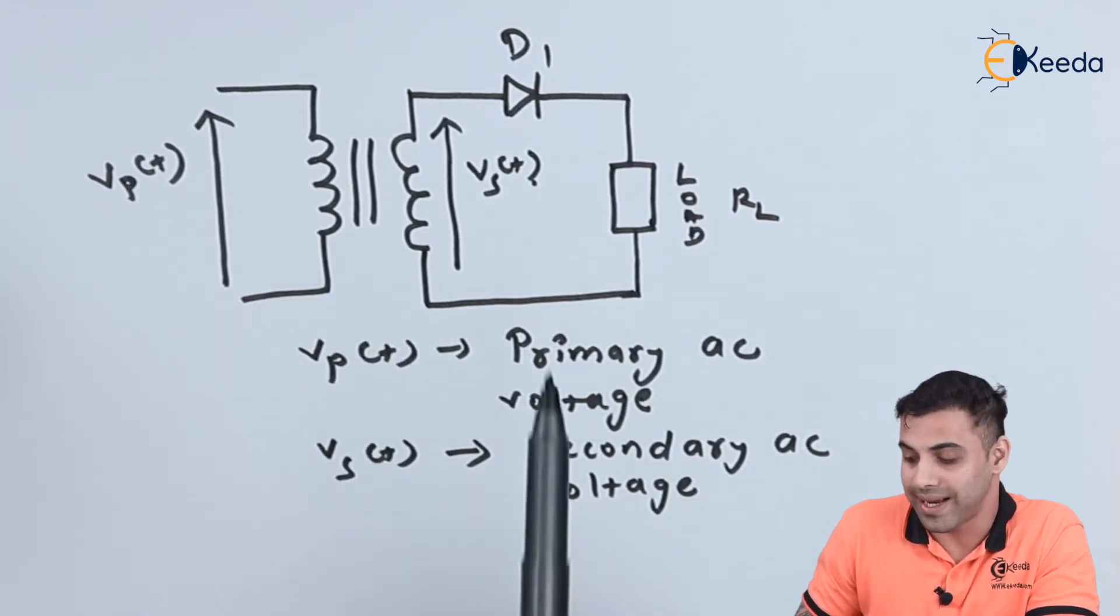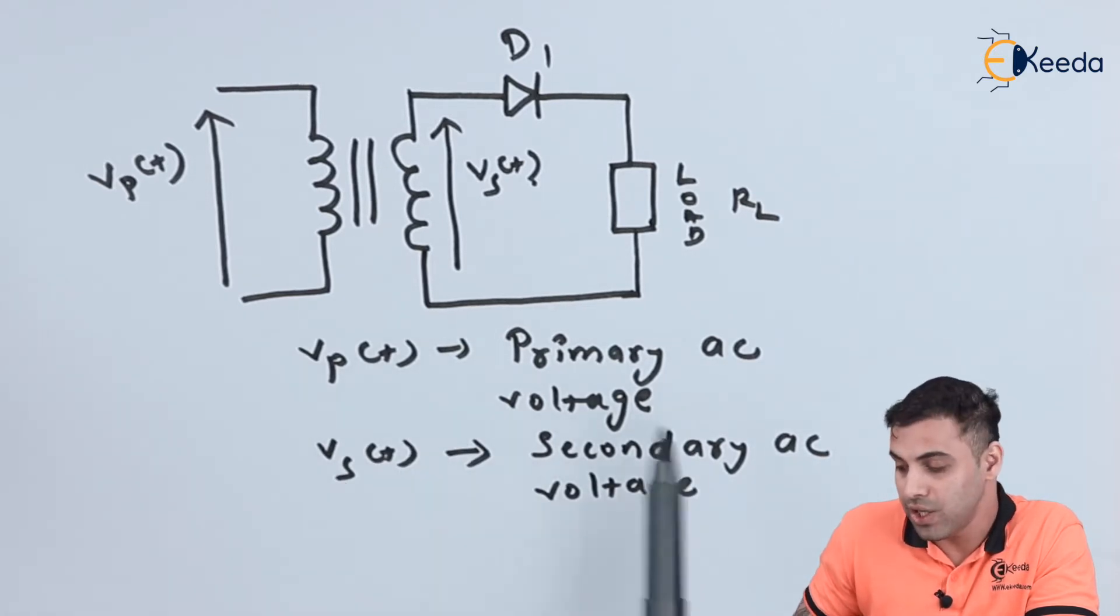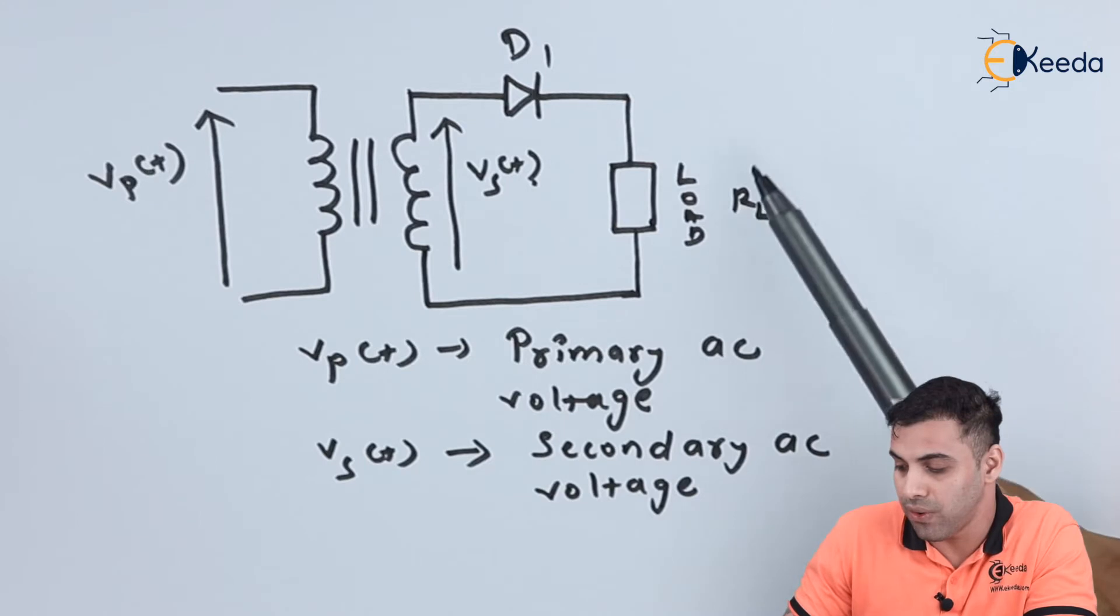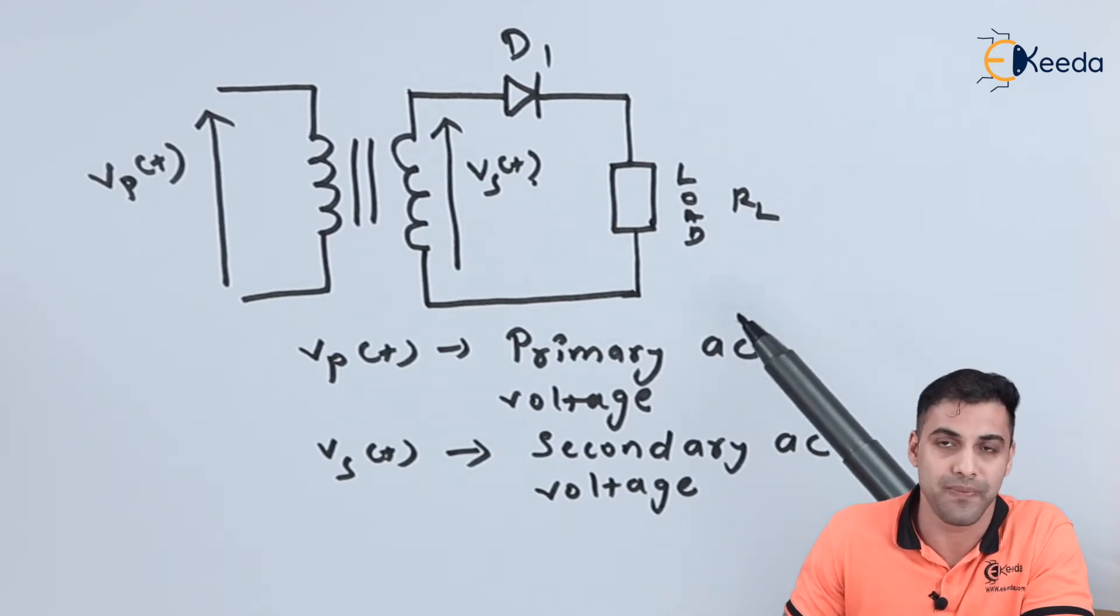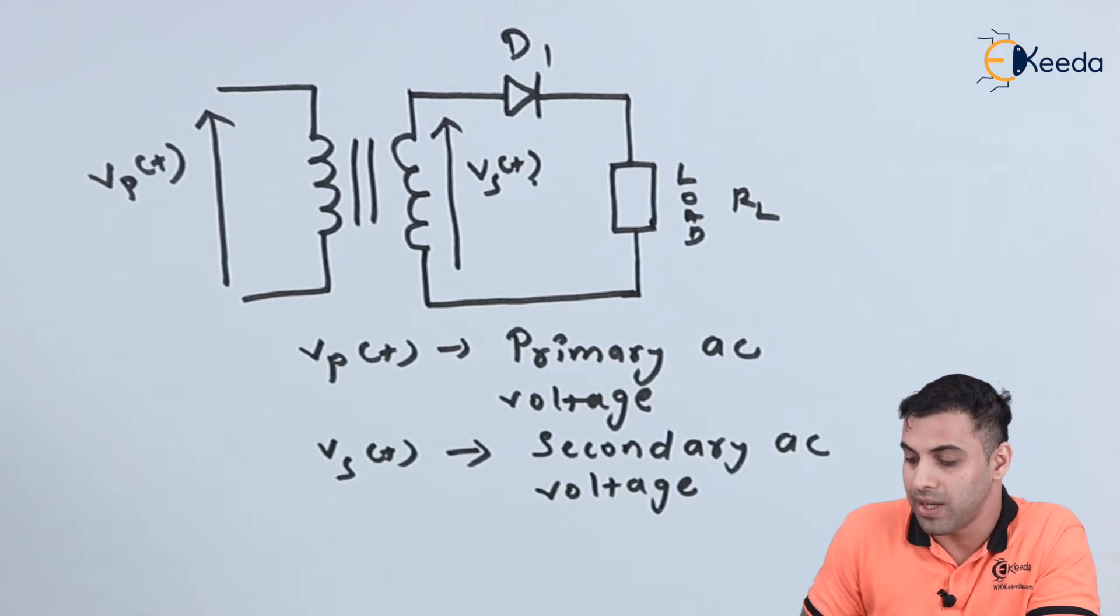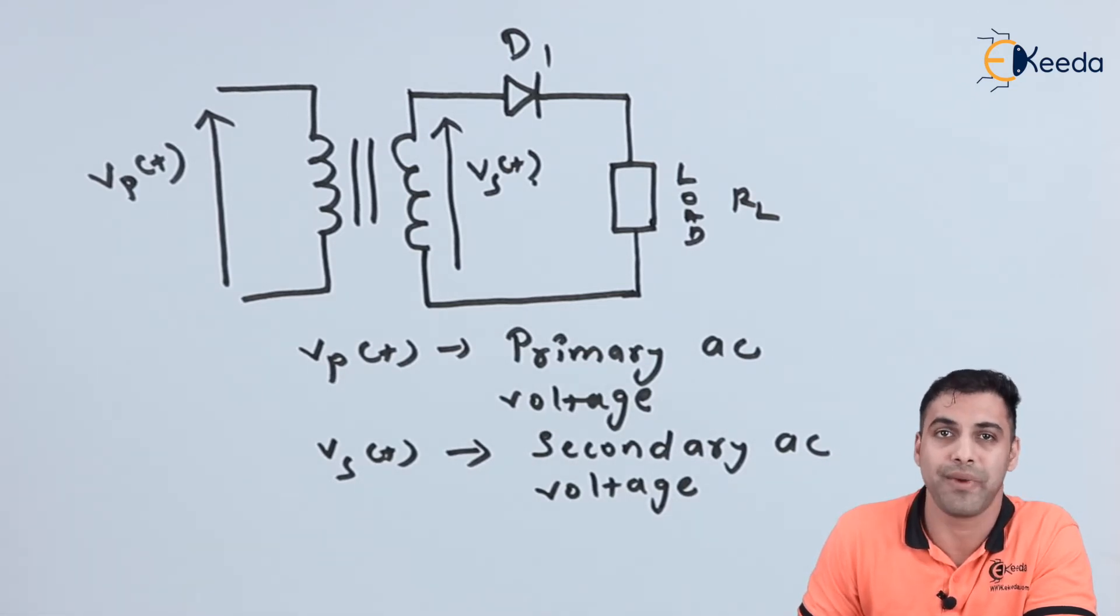This is how a rectifier works with a single-phase AC supply. It rectifies the AC voltage to DC voltage and allows the DC current to flow across the load resistor. So this is the circuit diagram of a rectifier.